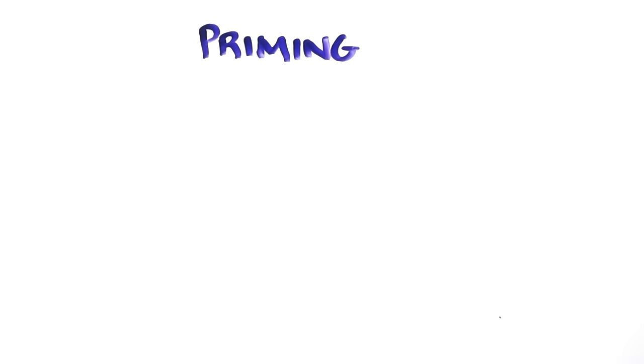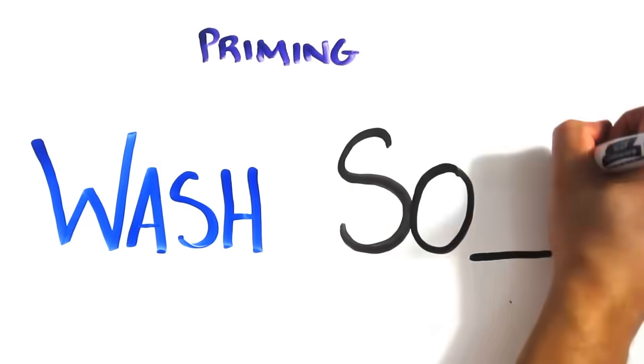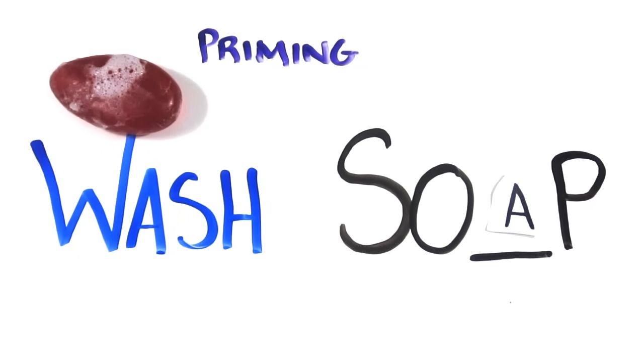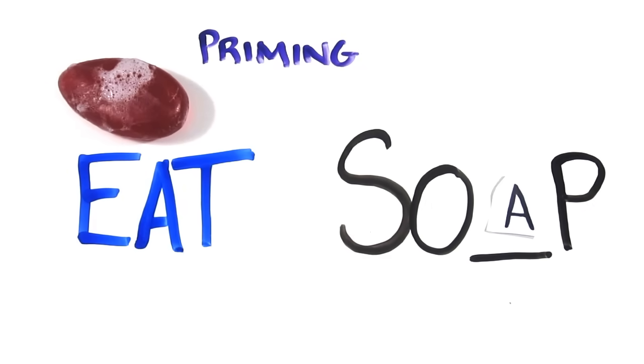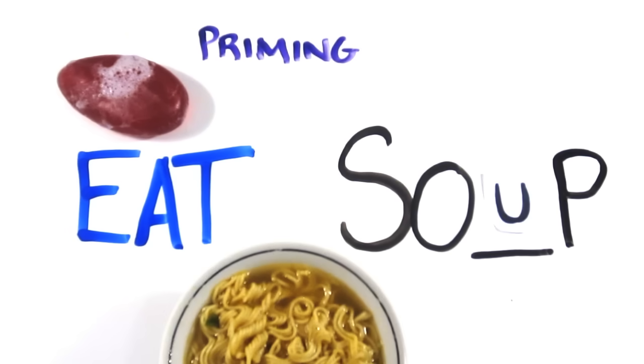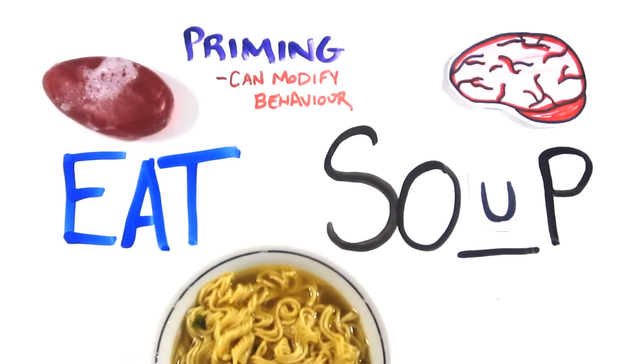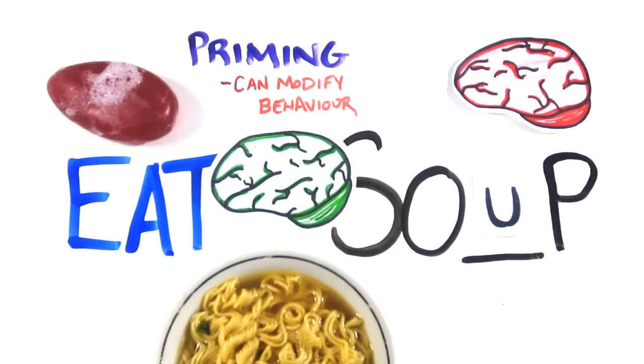This ties into a concept called priming. For example, if I said wash, how would you complete this word fragment? Most would see soap, but had I just shown you the word eat, you'd be more likely to see soup. In this way, both eat and wash prime your thoughts. Though System 2 likes to think that it's in charge and knows what's going on, the truth is that priming effects have even been shown to affect and modify behavior. These arise in System 1, and you have no conscious access to them.